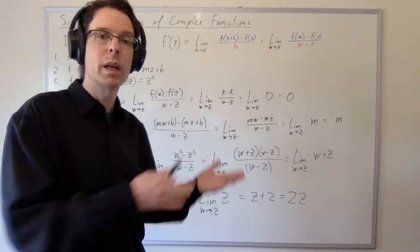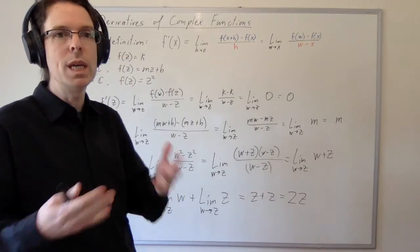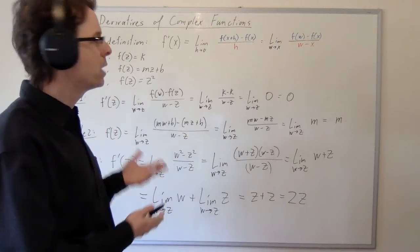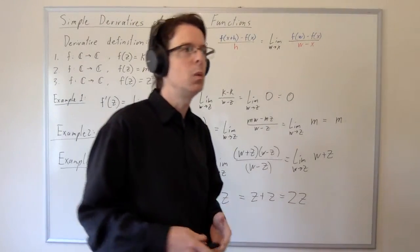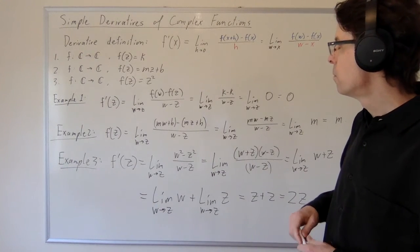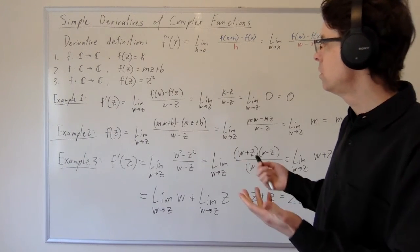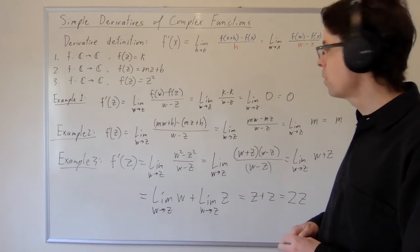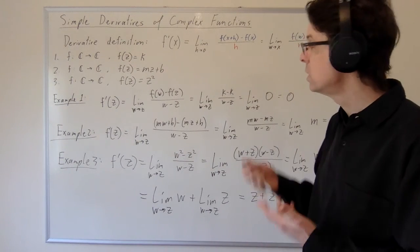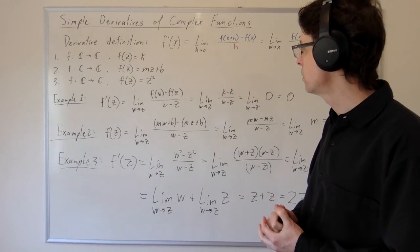Or the derivative of e to the z being e to the z in this context. We can't imagine that until we define what e to the z would mean for a complex number z. So we won't get to that until later. But when we do get to it, you'll be happy to hear that the formulas will work out as we expect, and the derivative of sine z will be cos z. So that's good news. All right. Thanks.